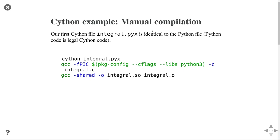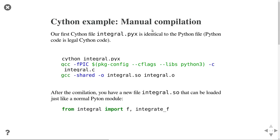We then compile the C program using GCC. It's a bit lengthy, but essentially there is a compilation step and a linking step to convert it into a shared library — an .so file. Once that is done, you have this new file integral.so, which can be used just like any standard Python module. After all this compilation, we can again write 'from integral import f, integrate_f' and have the functions available.